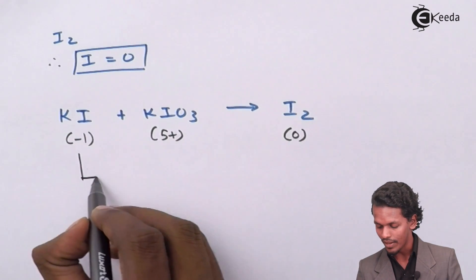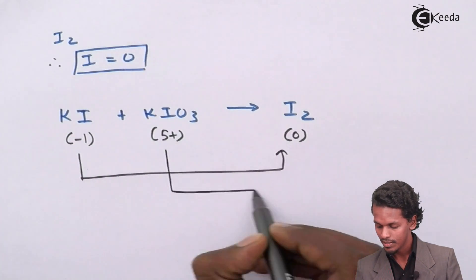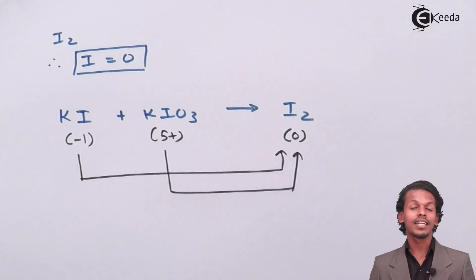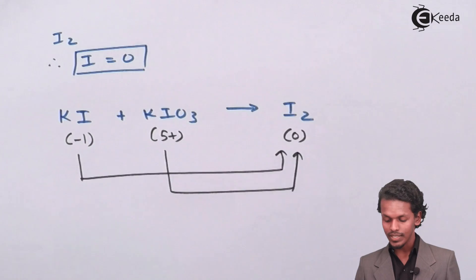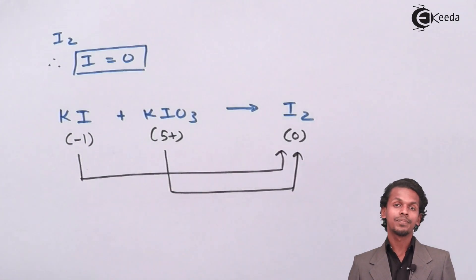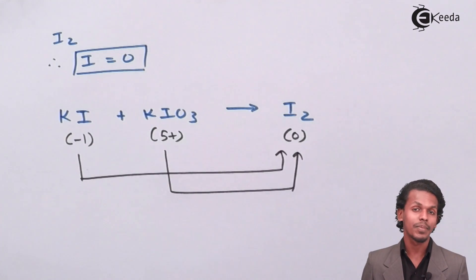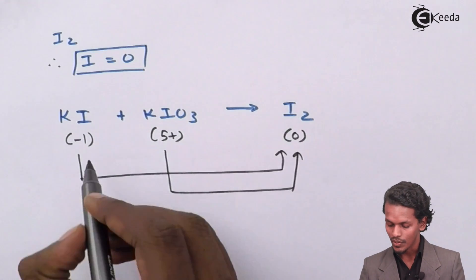So this kind of reaction that we have earlier done is now being classified as intermolecular oxidation reaction. Why? Because these two molecules are changing the oxidation number present in the reactant side.